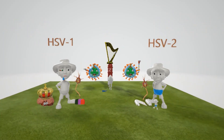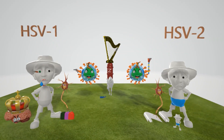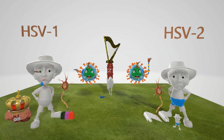There is no cure for herpes simplex virus 1 or 2. The goal of medications is to shorten the duration and severity of the disease. Acyclovir, an analog of guanosine, is commonly used as treatment. Valacyclovir is sometimes given, and less commonly famciclovir. Oral analgesics such as lidocaine can help with pain in the mouth in HSV-1. Thank you for watching this scene on herpes simplex virus 1 and 2.